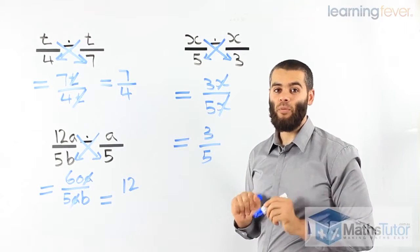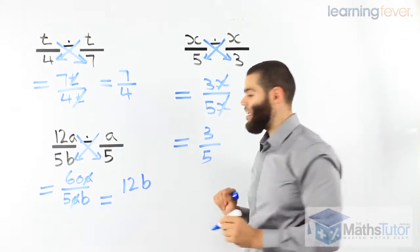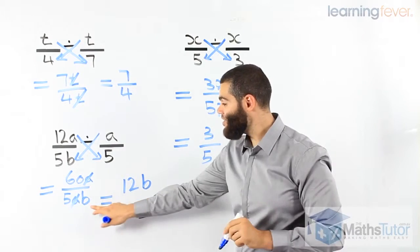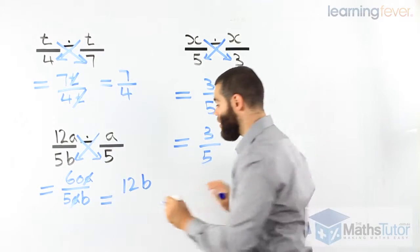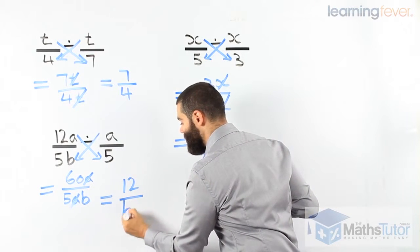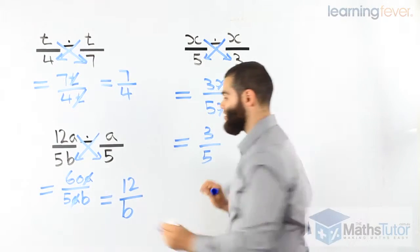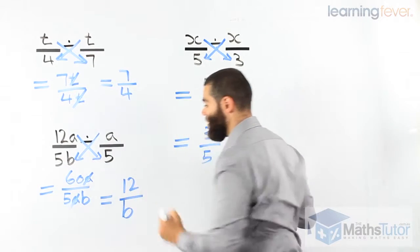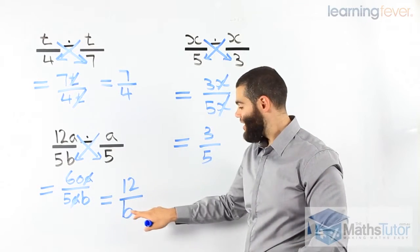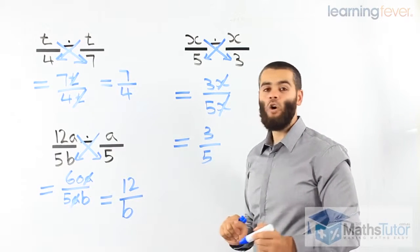Where do we put the b? I've seen students, they put the b right there. Is that right? No, it's not. Important, the b is in the denominator. It has to go down there. So, we take off the b. We put it where it should be down in the denominator. So, 60 divided by 5 is 12. The a's cancel. The b is in the denominator. It has to be in the denominator. So, our final answer is 12 over b. Very important that you pay attention for that.